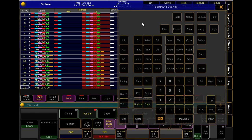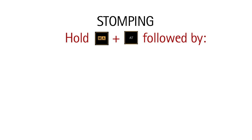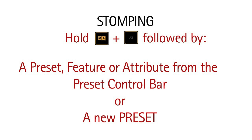Think of the effects as you would any other value that you can manipulate in the fixture sheet, and think of the effects in the effects pool like presets in your other pools. This data will track just as any other value would. That means that at some point you might want to turn your effect off. Because effects are treated in the same manner as other values, you can use release commands — store that into your queue and your effect will fade out. Alternatively, you can stomp out the effect. With your fixture selected, hold the MA key and press AT, followed by touching a preset, feature, or attribute from the control bar. For example, to stomp a movement effect on pan and tilt, I can select the fixtures, hold MA with AT, and then touch position in the preset control bar, or touch a new position preset. Save that information into your queue and this will also stop the effect.